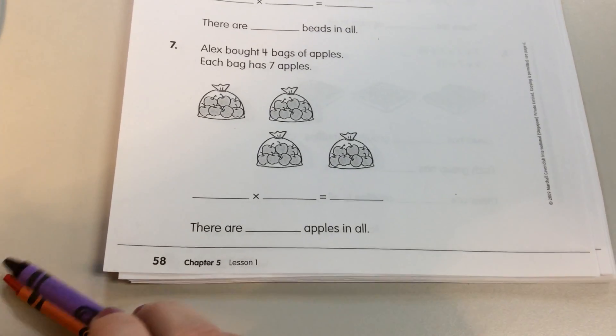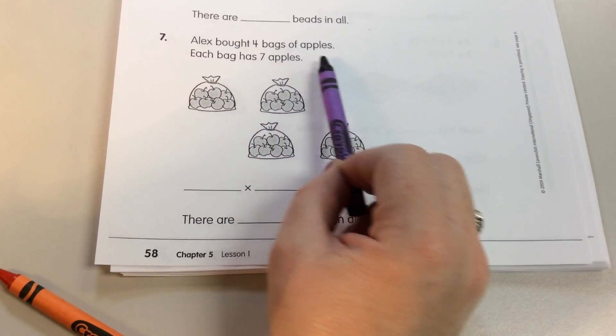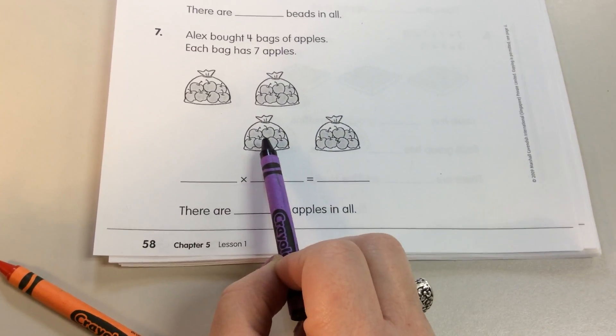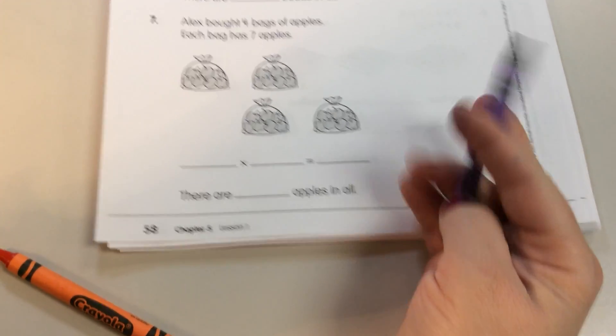Now, let's read what the story is telling us. Alex bought four bags of apples. Do we see that? Yes! Now, each bag has seven apples. Well, let's see. Let's count them.